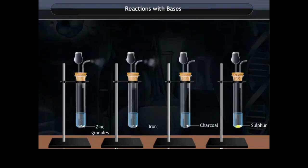You will observe that in test tubes A and B, gases are formed, while in test tubes C and D, no gas is formed. We know that zinc and iron are metals, whereas charcoal and sulfur are non-metals. Bring a burning matchstick near the mouth of each test tube.